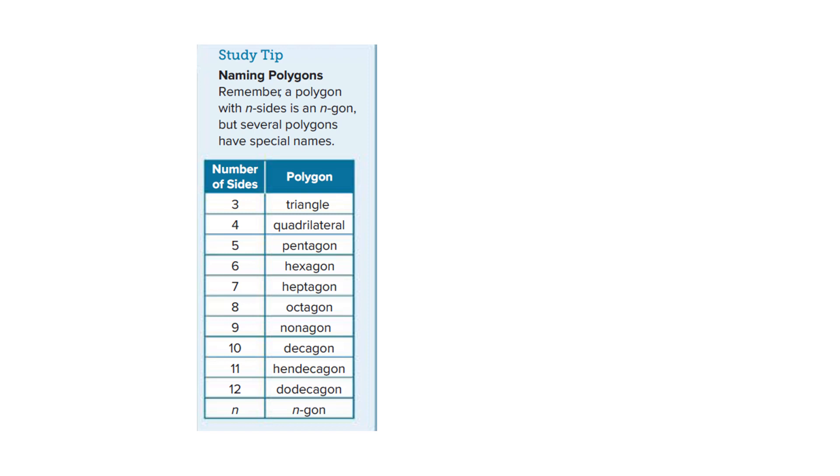Now coming to this slide, I have kept here an important study tip for all of you. If you remember, a polygon with N sides is called N-gon. You remember we started the lesson by 5-gon but it also has another name, Pentagon. So therefore, there are some special names for the polygons. So if the polygon has 3 sides, it's called triangle. If it has 4 sides, quadrilateral, 5 sides, pentagon, 6 sides, hexagon.